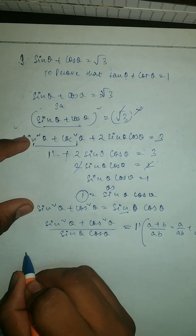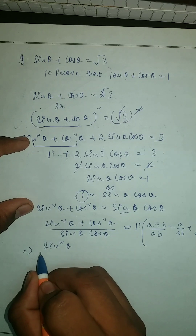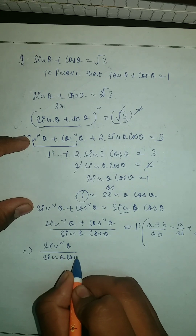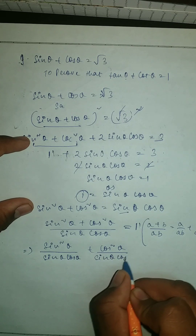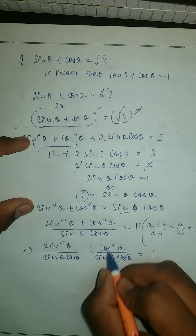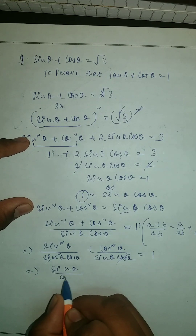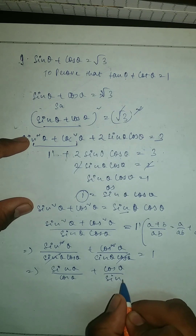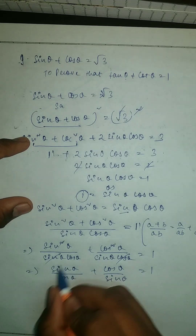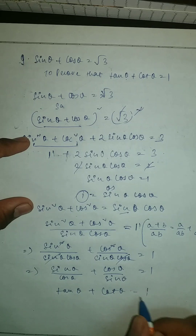So we can write this as sine squared theta upon sine theta cos theta, plus cos squared theta upon sine theta cos theta, is equal to 1. Then cos and cos cancel, and sin and sin cancel, leaving us with sine theta upon cos theta plus cos theta upon sine theta, which is tan theta plus cot theta, equal to 1, which is equal to RHS.